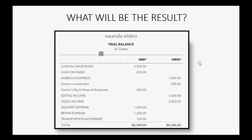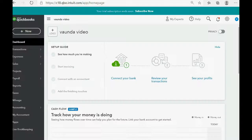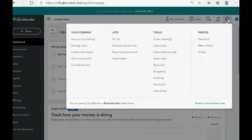The result will be: Repair Expense increases by $500 to become $1,700, because we paid for more repairs. And because that money came from the owner's personal account into the business, the Owner's Investment also increases by $500 to become $700. This is what the trial balance should look like after we record this transaction. From the top right, click the cog wheel and go to Chart of Accounts.